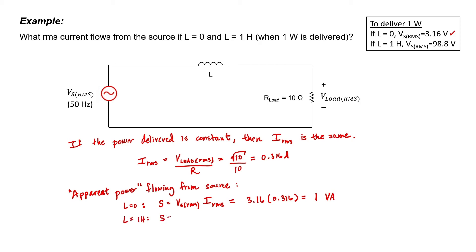When we add that 1 Henry inductor and try to deliver the same amount of power to the load, we previously calculated that we need a source voltage of 98.8 volts RMS. If we calculate the apparent power at the source, we end up with a much higher number.